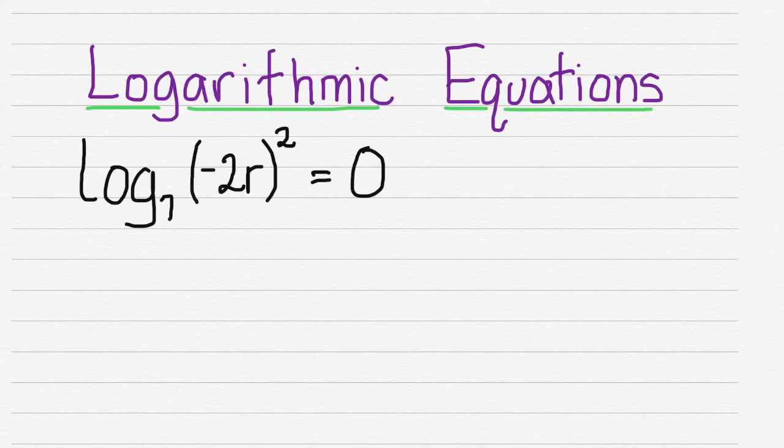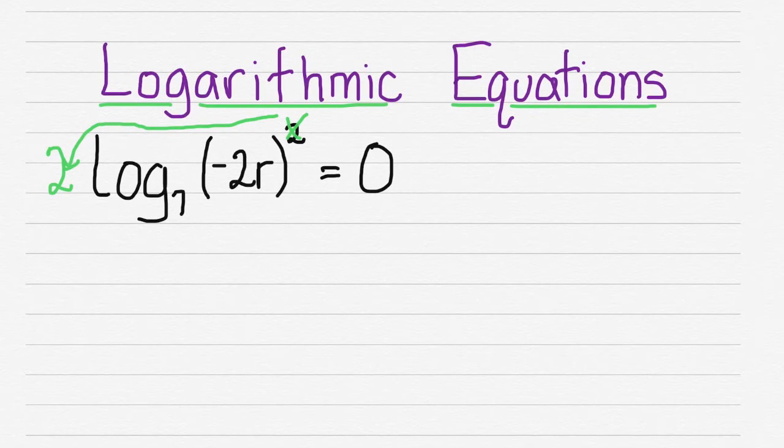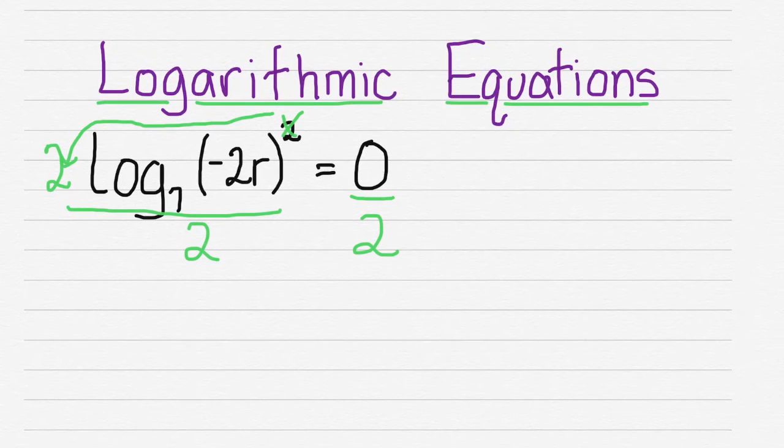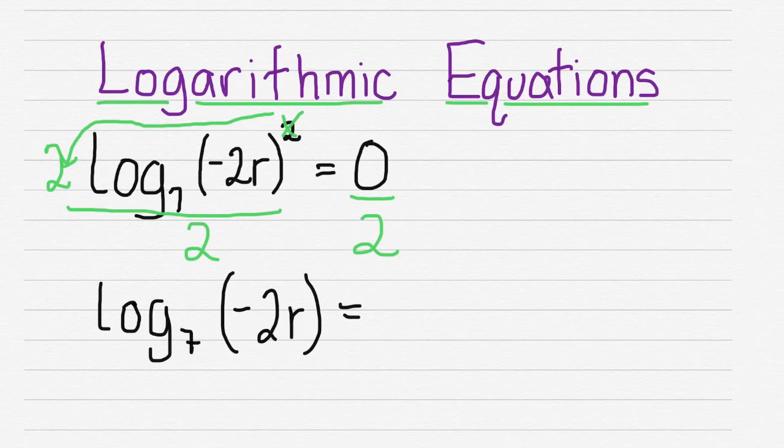The first thing we're going to do is use our power rule. We're going to move our square over here and multiply. We're going to put our 2 here. Next, we're going to divide that 2 from both sides. Our result will be log base 7 of negative 2r equals 0, because 0 divided by 2 is still equal to 0.